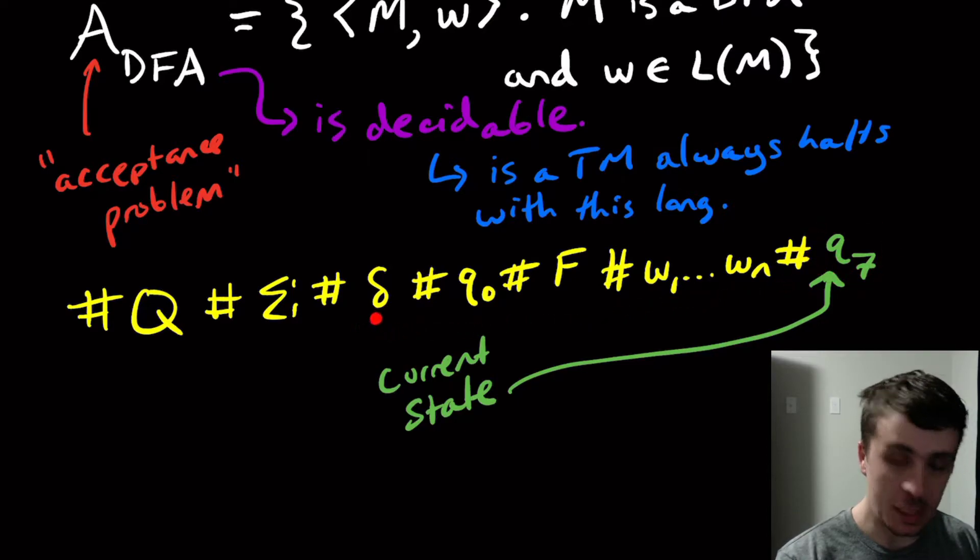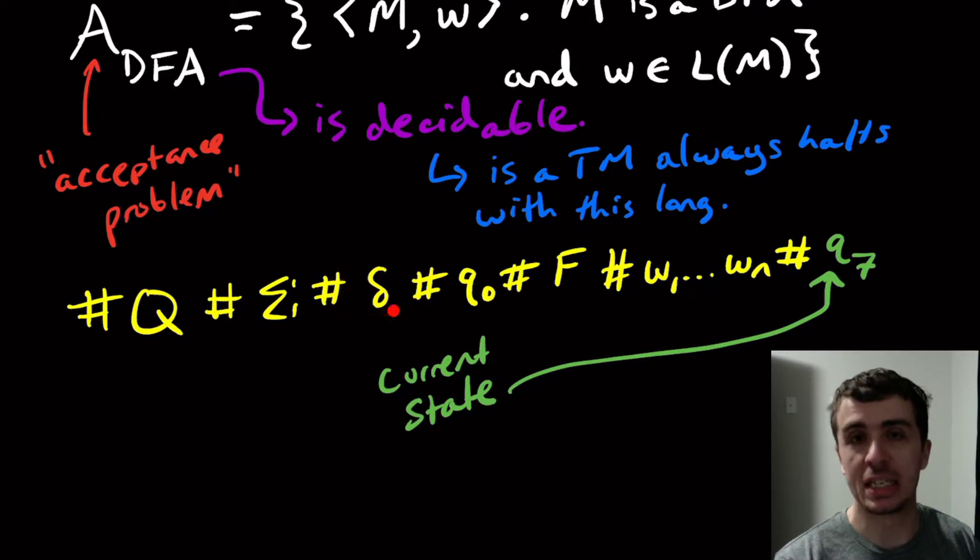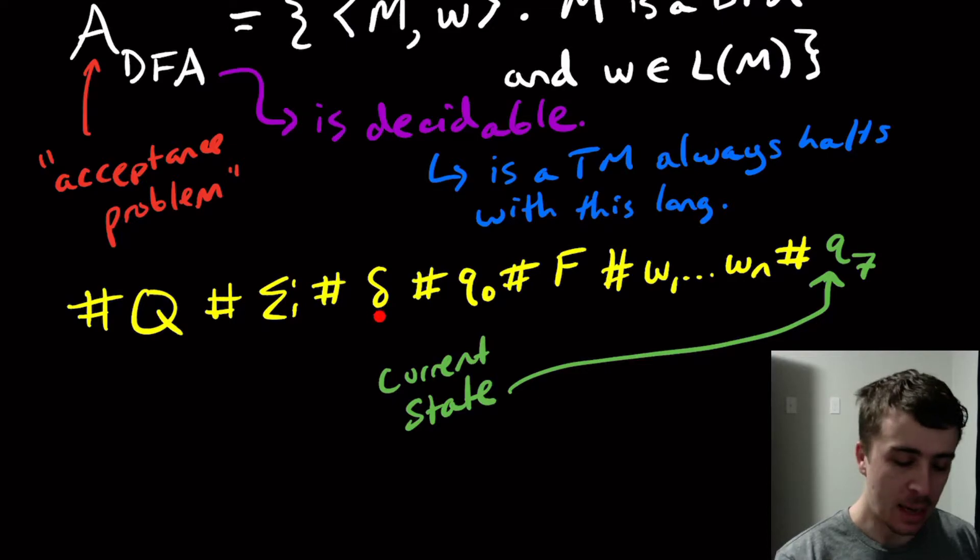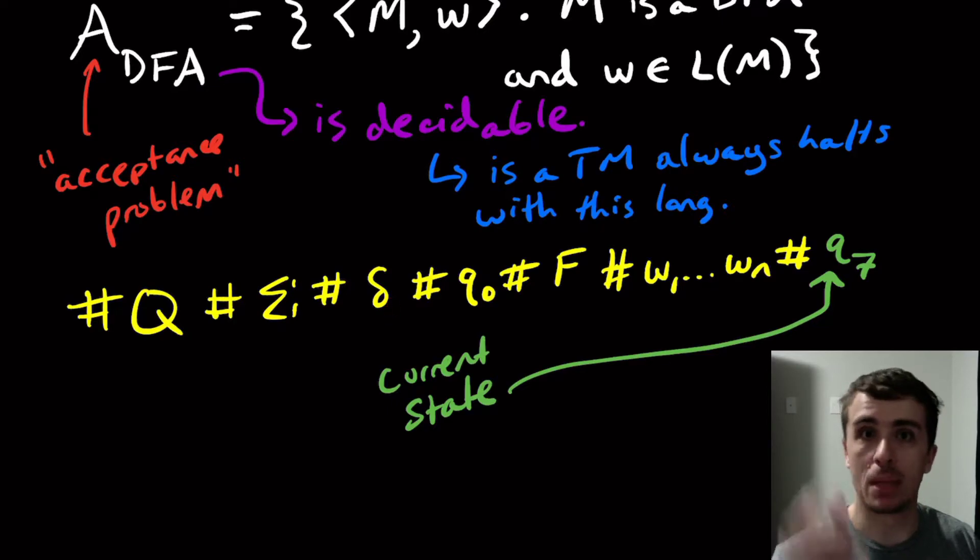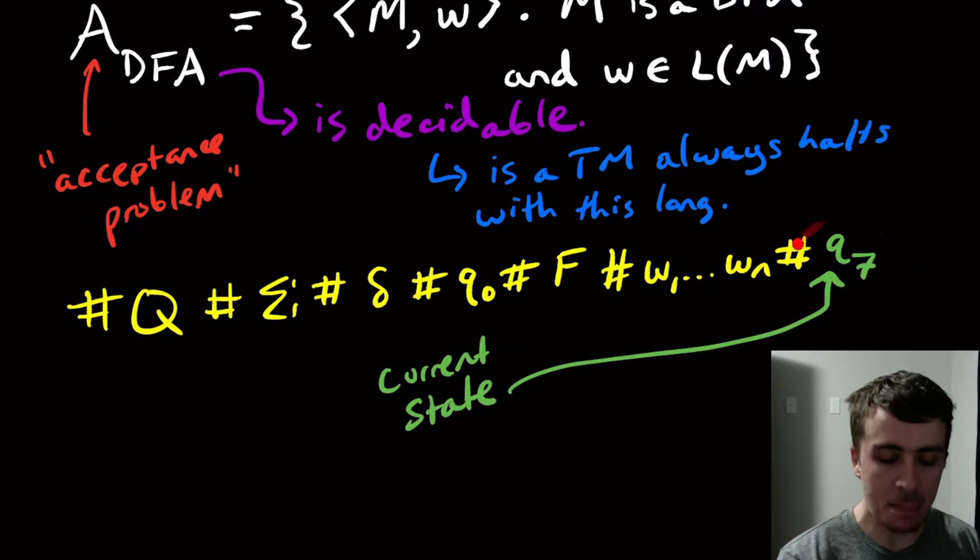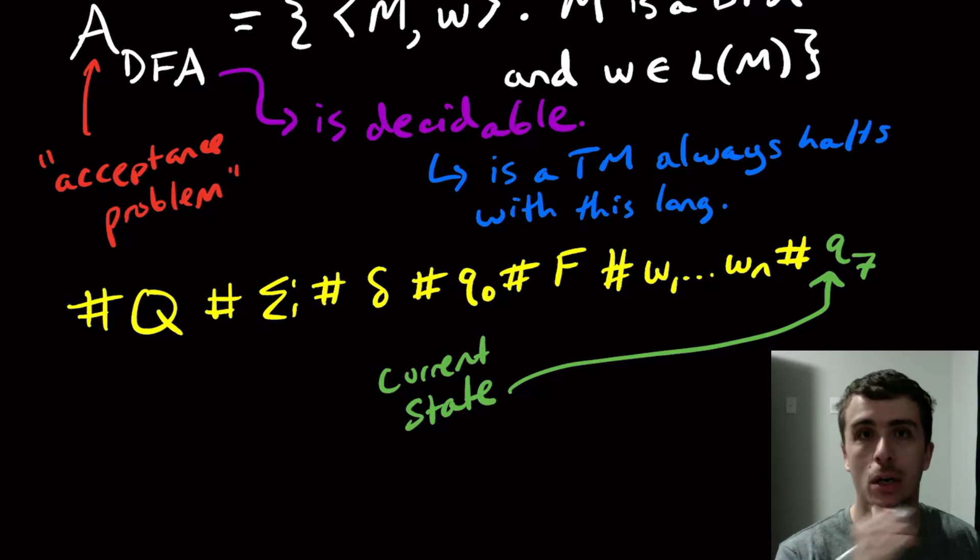Then I need to look at the current input character I'm going to look at, and what state I'm in, then zoom over to here, look at the transition function, see what the transition function says to do. And then whatever state is the third one in the triplet, which is the state that you're in, the symbol that you're reading, and the one you're going to on that transition, whatever that third one is, I'm going to update this guy over here to be that particular state.